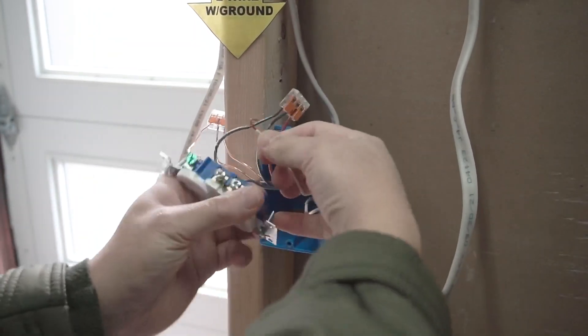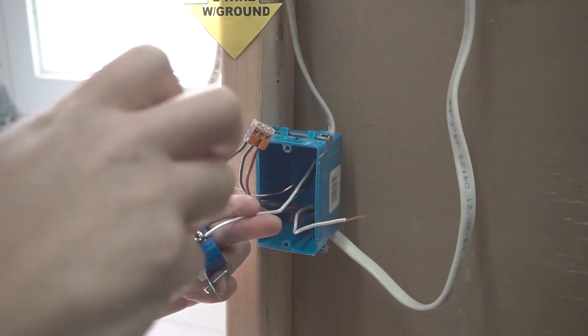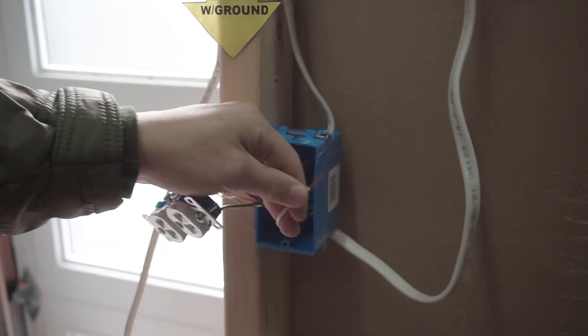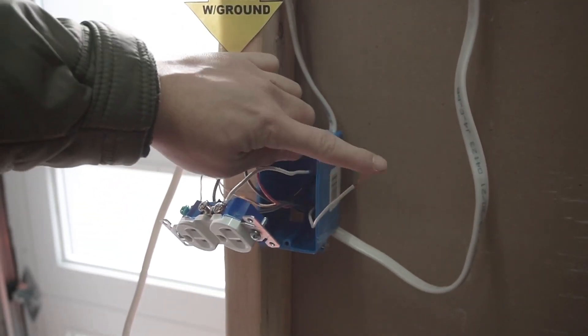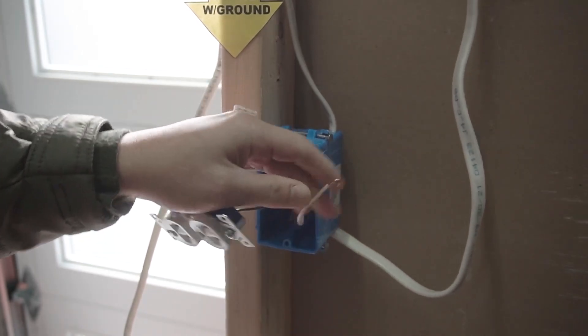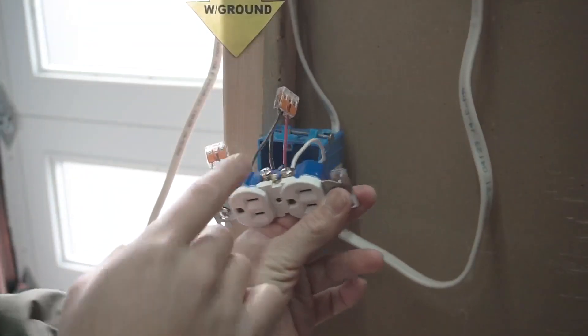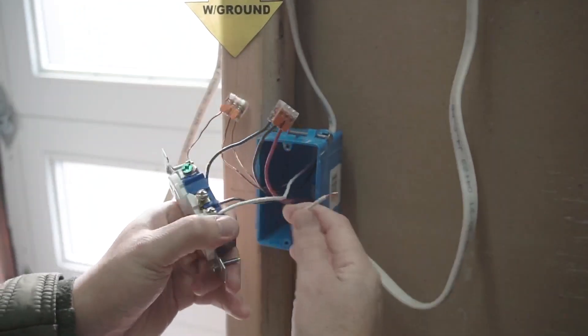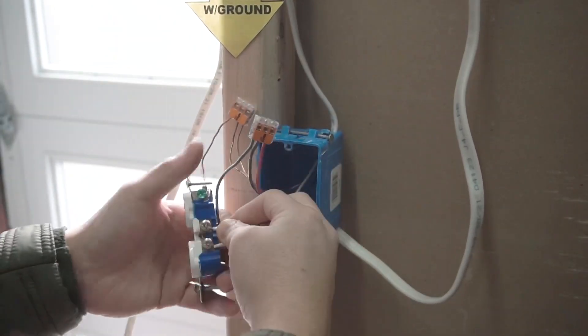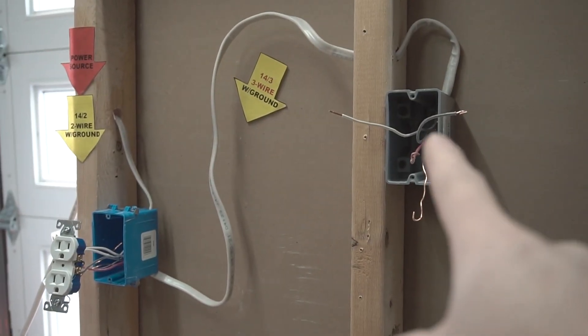So let's do that. Take the neutral, put it on the clockwise position. We're going to take our 14-3 neutral, make a loop on that, and we're going to attach that onto the bottom terminal, the last terminal on the bottom of the outlet. Tighten that in a clockwise manner.